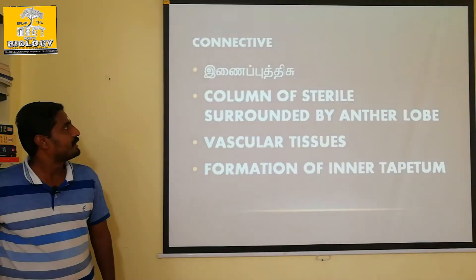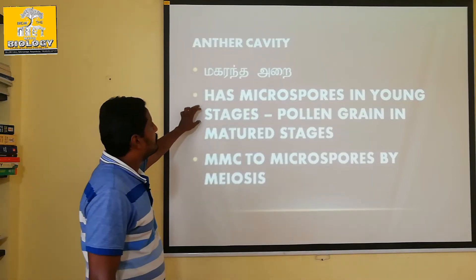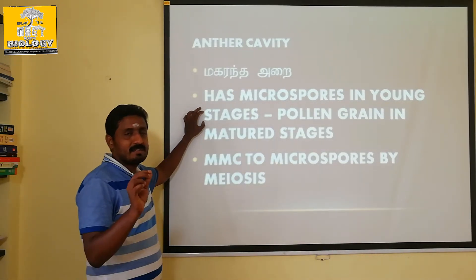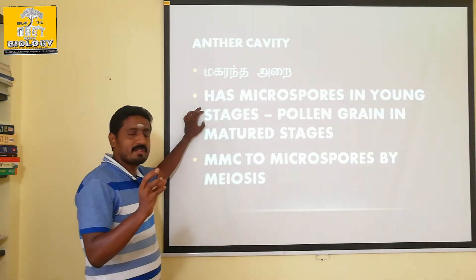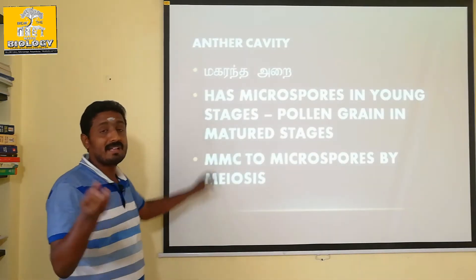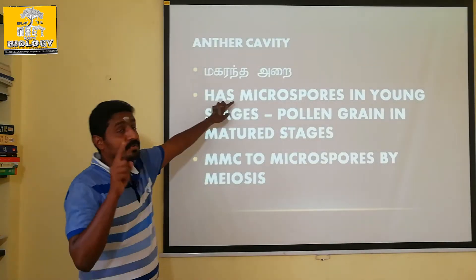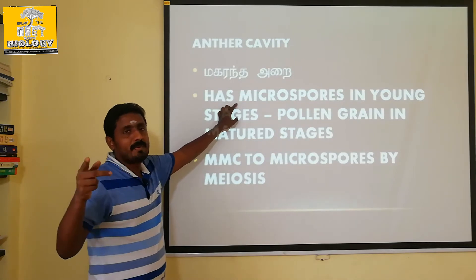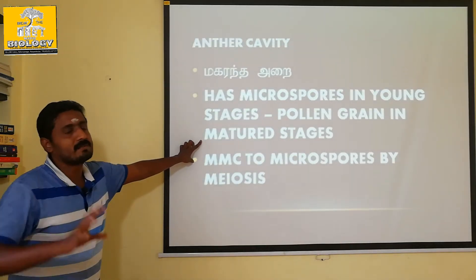In the young stages, the anther contains microspores. As the anther develops and the microspores mature, pollen grains are developed.